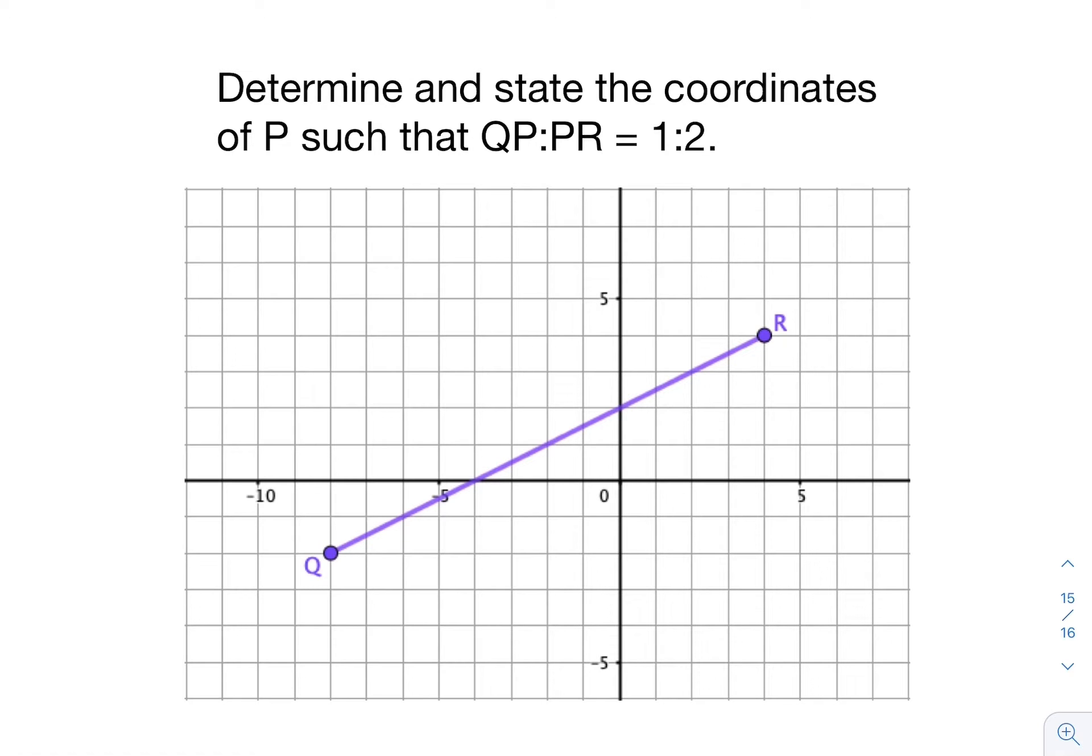We're told to determine and state the coordinates of P, so we're creating a new point such that QP:PR equals 1:2. We need to create a ratio of 1 to 2 along segment QR.